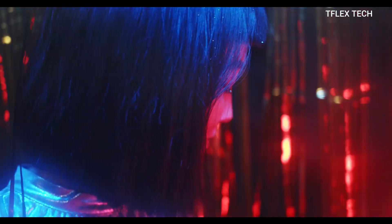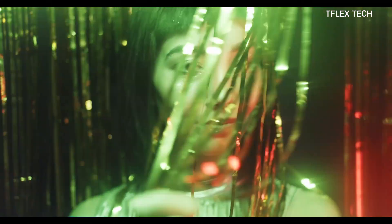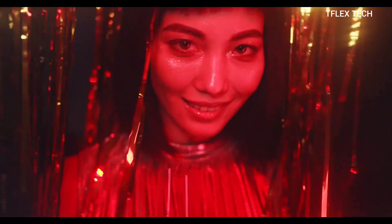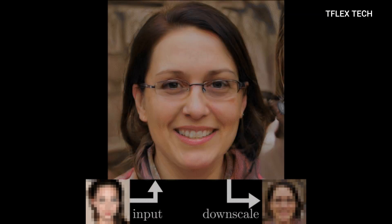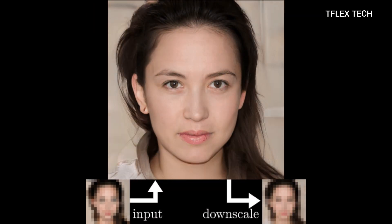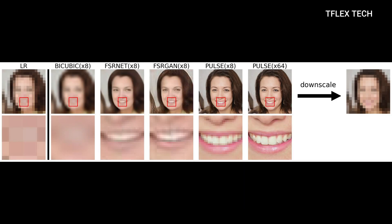Researchers have figured out a way to transform a few dozen pixels into a high-resolution image of a face using artificial intelligence. A team from Duke University in the U.S. created an algorithm capable of imagining realistic-looking faces from blurry, unrecognizable pictures of people, with eight times more effectiveness than previous methods.